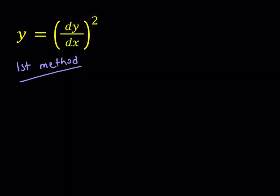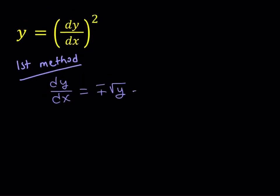The first method is going to involve square rooting both sides. When we square root both sides, we're going to get the plus or minus. So we're going to get dy over dx equals the square root of y with the plus or minus sign, because when you square this number either way you're going to get y. From here we can separate the variables, because this is a separable differential equation. We can write this as dy over square root of y equals plus or minus dx.